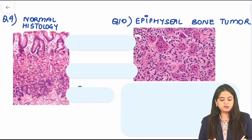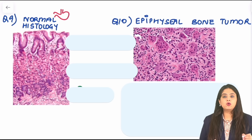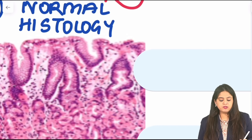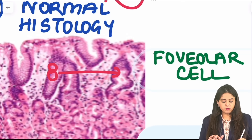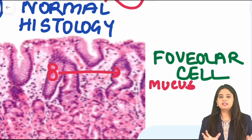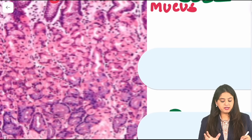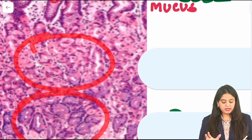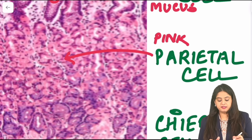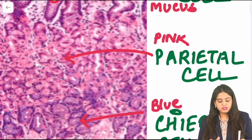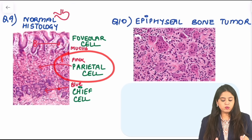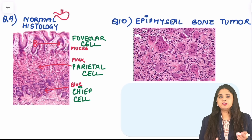Question 9 shows normal histology of the stomach — this is also your homework. There are three main cell types: the cells at the top that look empty are foveolar cells, which produce mucin. Going further down, there are two colors: pink cells are parietal cells (P for pink), and blue cells are chief cells. Your homework is to type in the comments: what does the parietal cell release, and what does the chief cell release?